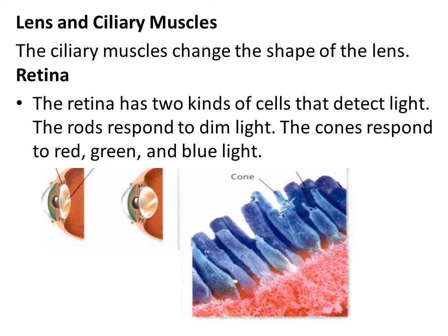After entering the pupil, the light passes through the lens. It is a convex lens that refracts light to form an image on the lining of your eyeball. Ciliary muscles hold the lens in place behind the pupil. When you focus on a distant object, the ciliary muscles relax and the lens becomes longer and thinner. When you focus on a nearby object, the muscles contract and the lens becomes shorter and fatter.